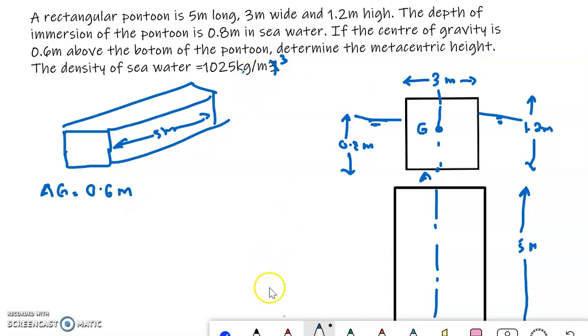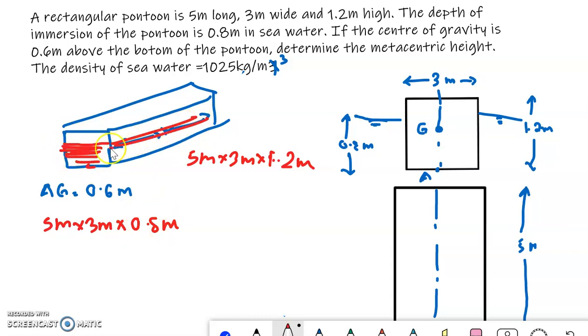Now when we discuss this, initially the pontoon volume is 5 meter into 3 meter into 1.2 meter. Out of this only 5 meter into 3 meter into 0.8 meter is in water. That means this volume will be in water, remaining portion will not be in water.